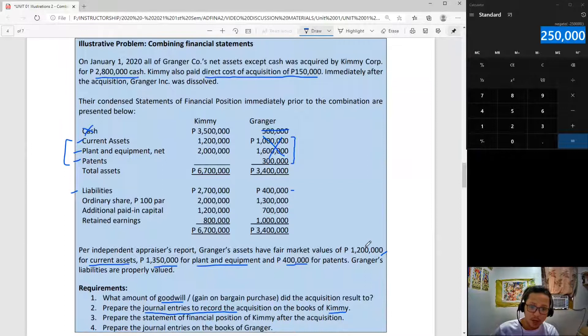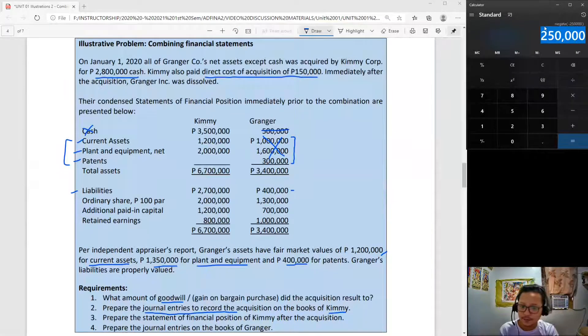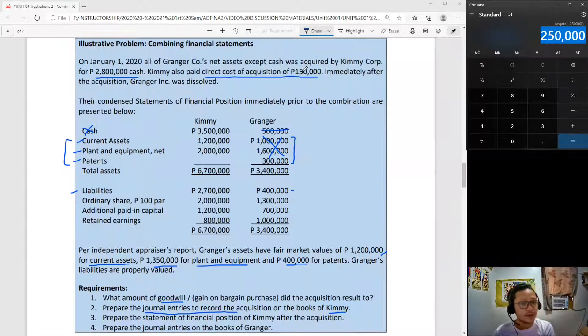Another debit for plant and equipment 1,350,000, patents will be debited as well for 400,000. Don't forget that our acquisition resulted in goodwill of 250,000, so you need to debit that as well. Credit liabilities for 400,000. Kimi also paid direct cost of acquisition - this is a debit to business combination expense or retained earnings and credit to cash of 150,000.